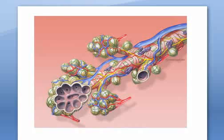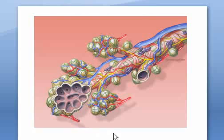Each alveolus is surrounded by a network of blood vessels, as mentioned before. As a result of infection from bacteria or viruses, these air sacs, or alveoli, get filled with water, pus, or blood, which causes disruption in the absorption of oxygen. This condition is known as pneumonia.